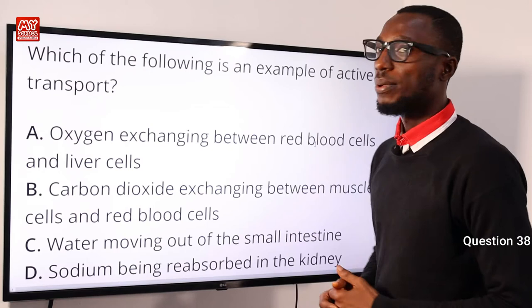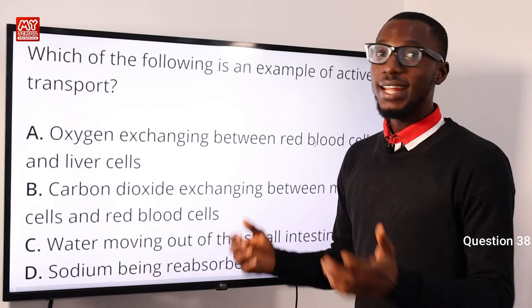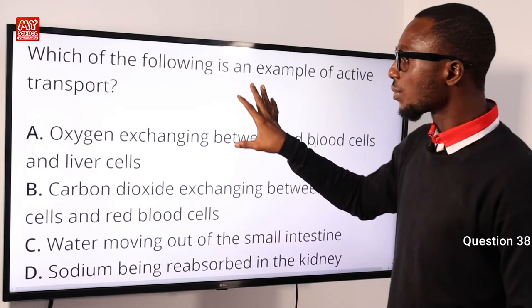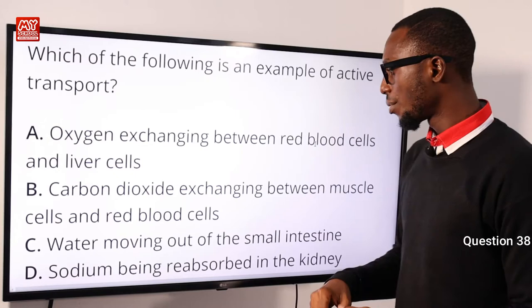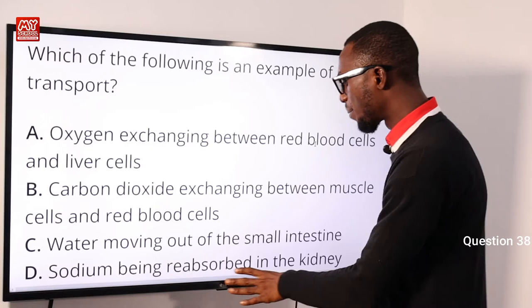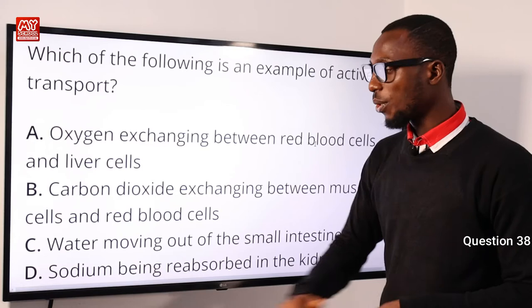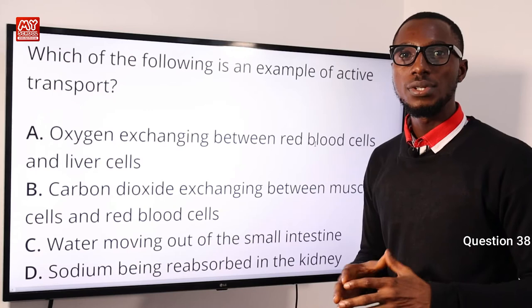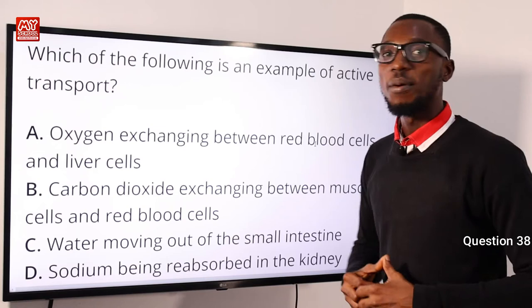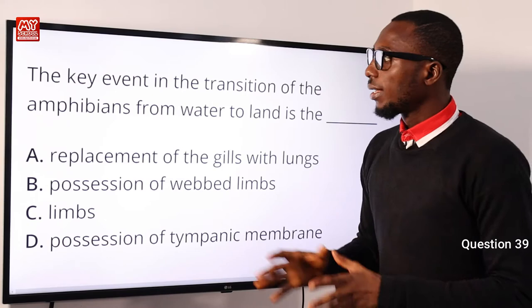Question 38: Which of the following is an example of active transport? Active transport is moving against the concentration gradient, and energy is required — such energy comes from the oxidation of glucose during respiration. Options A, B, and C involve diffusion and are not examples of active transport. Sodium being reabsorbed in the kidney is a very good example of active transport because of the charge sodium ions carry, making simple diffusion not feasible across cell membranes. Option D is correct.